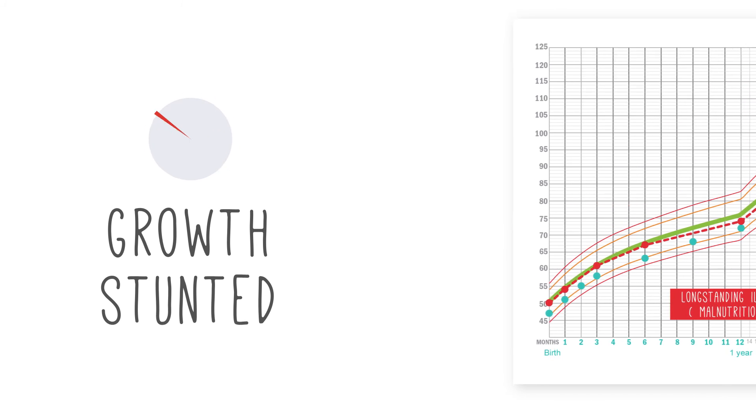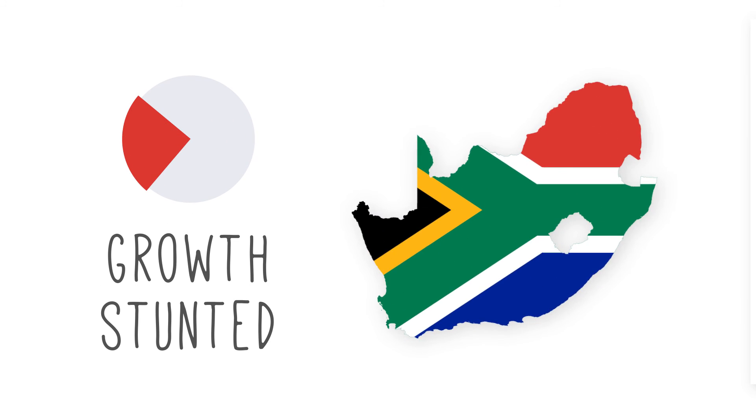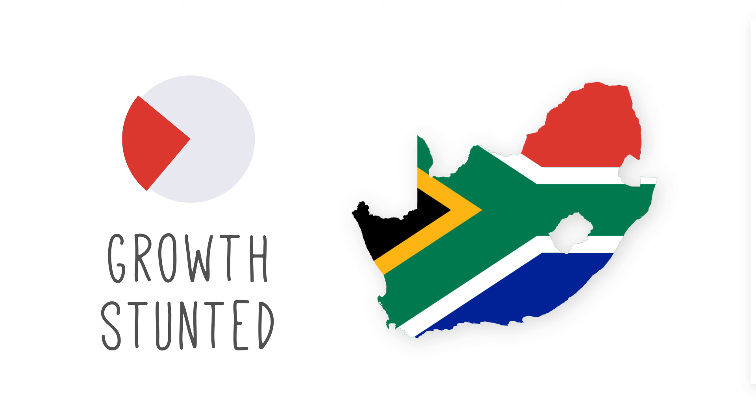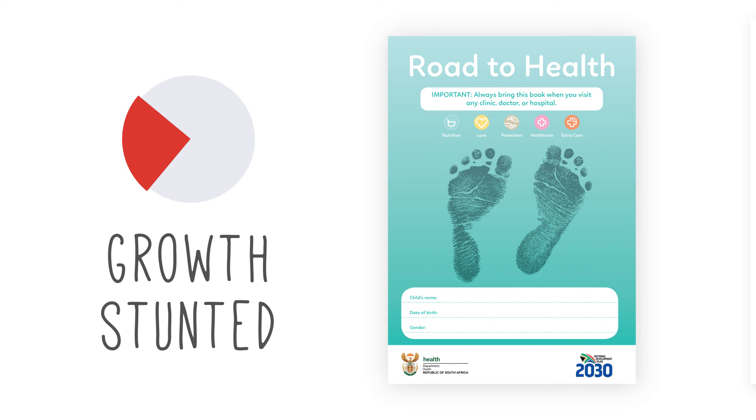Growth stunting is still a serious problem in South Africa. So the fact that the new Road to Health book recommends routine monitoring of height for age is a step in the right direction towards reducing growth stunting.